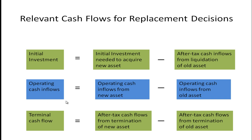For operating cash inflows, we look at the cash inflows from the new asset minus what operating cash inflows we had from the old asset. We can't just start with the new cash flows and say we have $100,000 — if the previous project had $80,000 in cash flows, we have to subtract that out. Finally, we'll have a terminal cash flow when we dispose of the asset — when we sell off the new asset, you'll have some after-tax cash flows from the termination of the new asset.